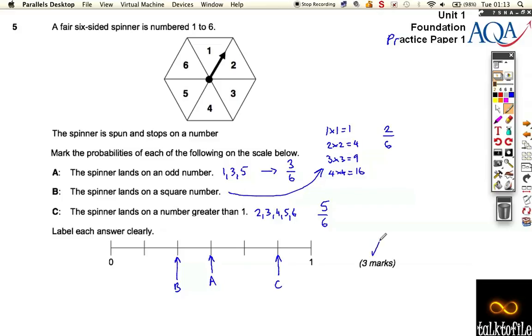And that's 3 marks, 1 mark for getting A in the right place, 1 mark for getting B, and 1 mark for C in the right place.